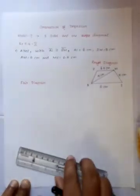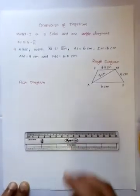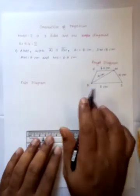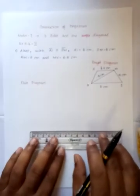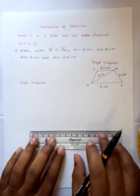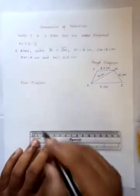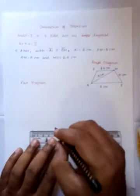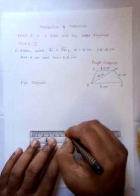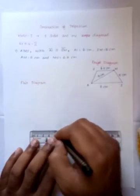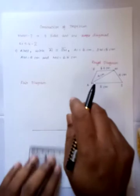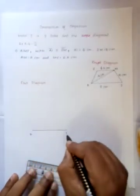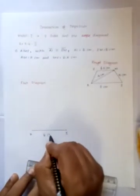Next, draw the fair diagram. First, we have to draw the base of the trapezium. The base AI is equal to 6 cm. Draw line segment AI of 6 cm.